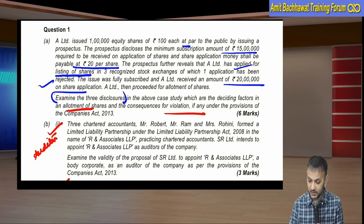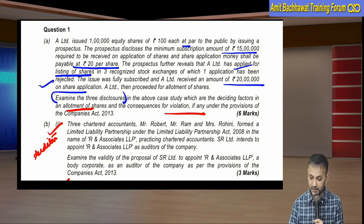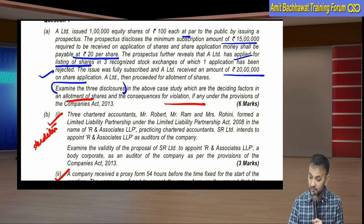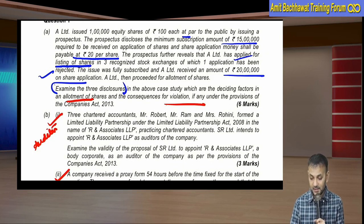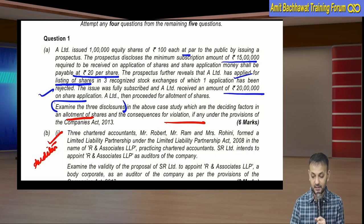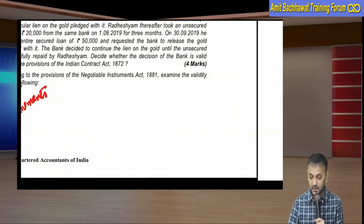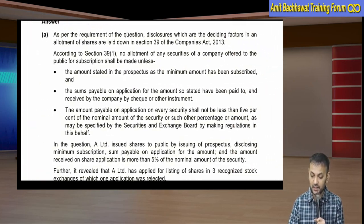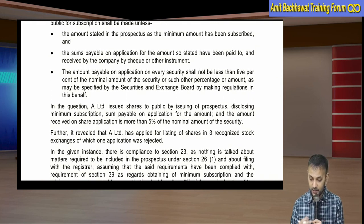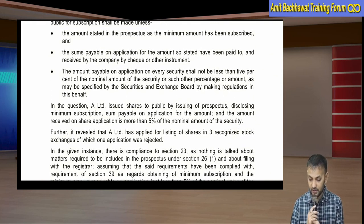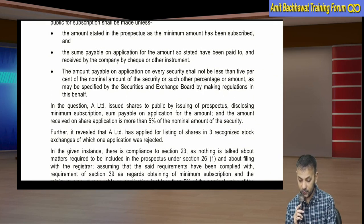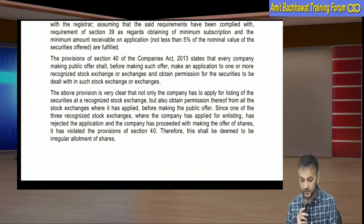The three disclosures were: minimum subscription, how application money should come, and the listing matter. Which are the deciding factors in allotment of shares, and what are the consequences for the violation, if any, under the provisions of the Companies Act? It's a very interesting question. Three things happened here - we'll observe what violations occurred, and if allotment is improper, you have to refund the application money within the prescribed time frame.